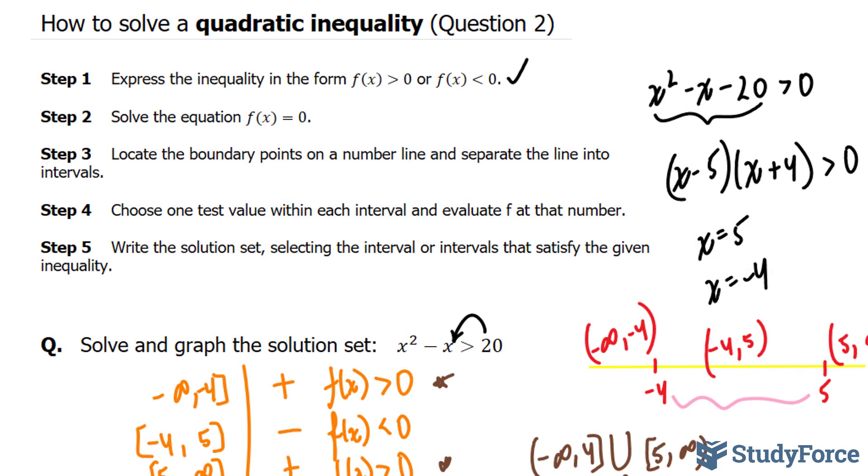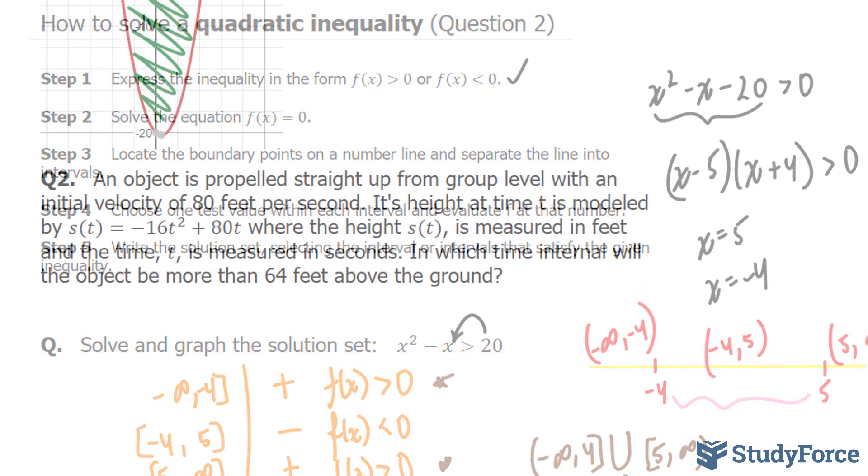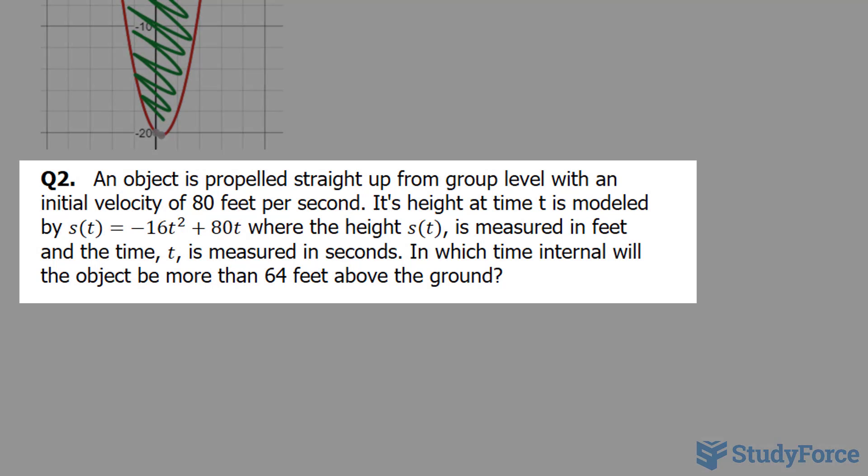In question 2 of our quadratic inequality series, we ended off with the following, where it asks: an object is propelled straight up from the ground level with an initial velocity of 80 feet per second.